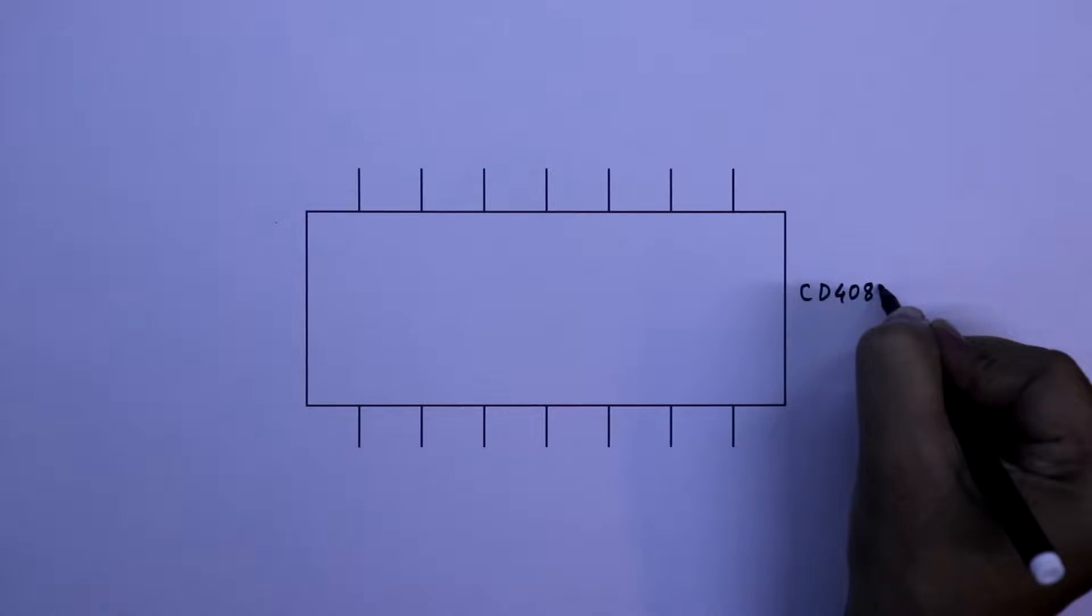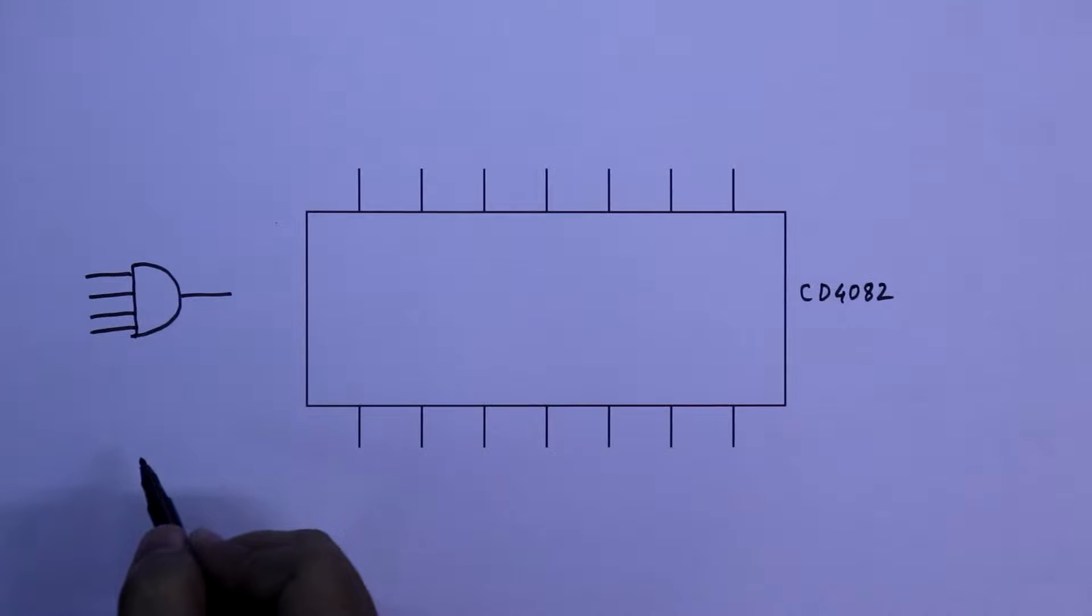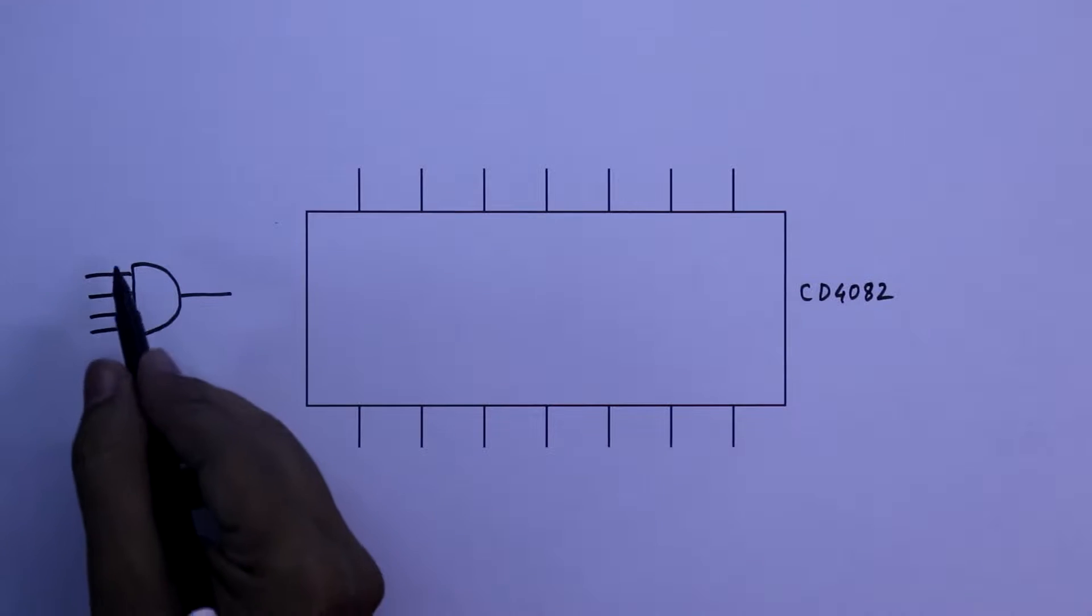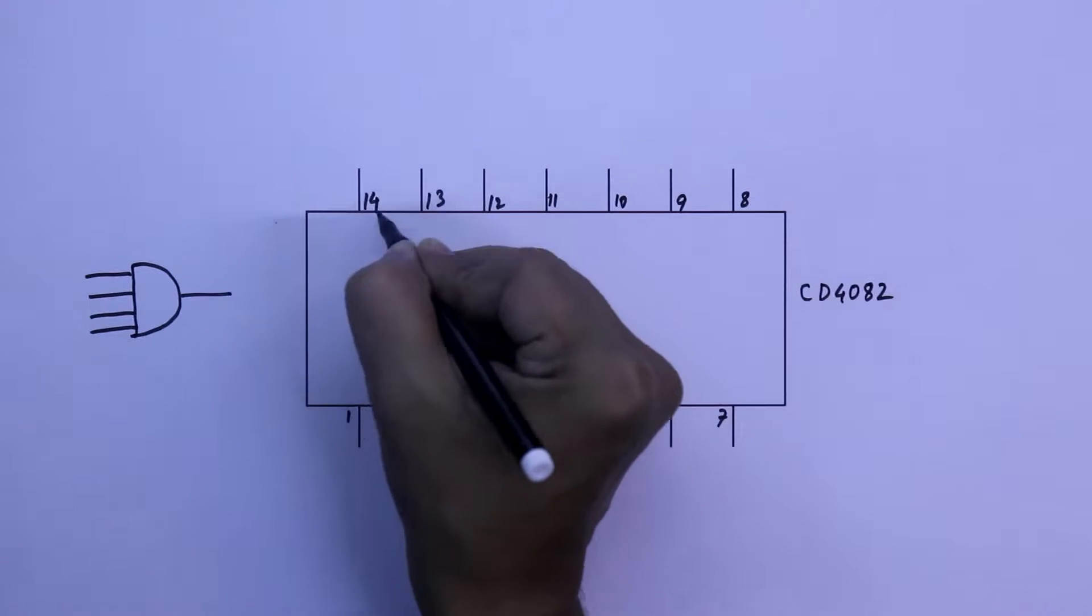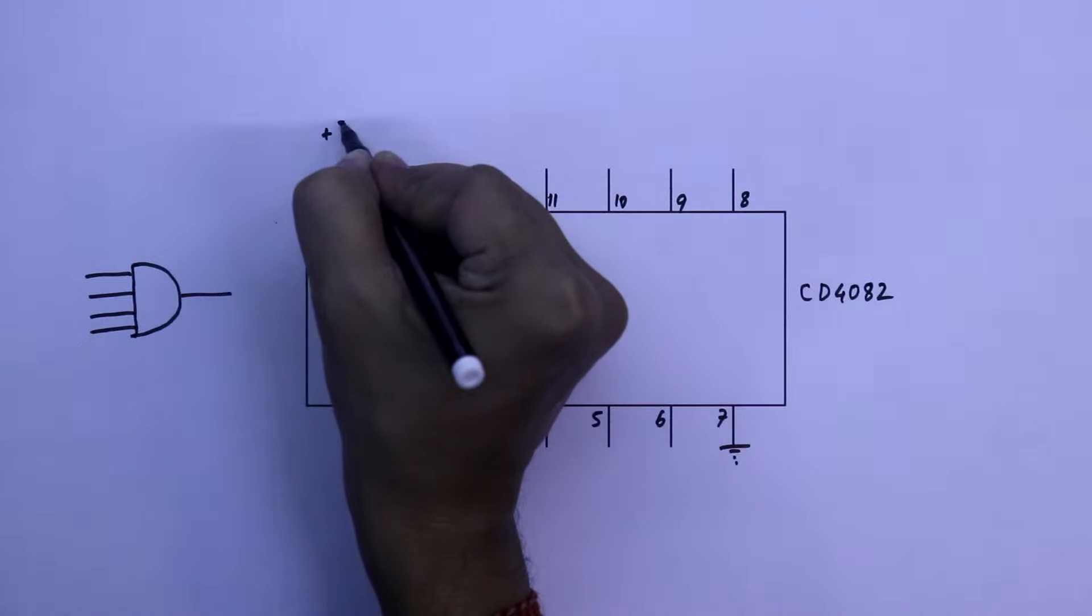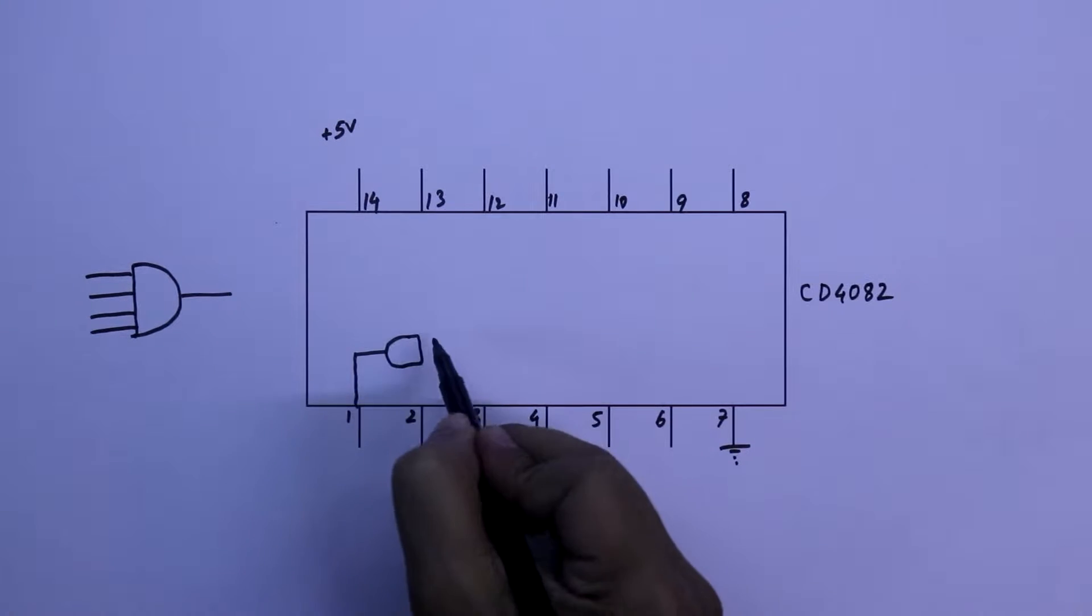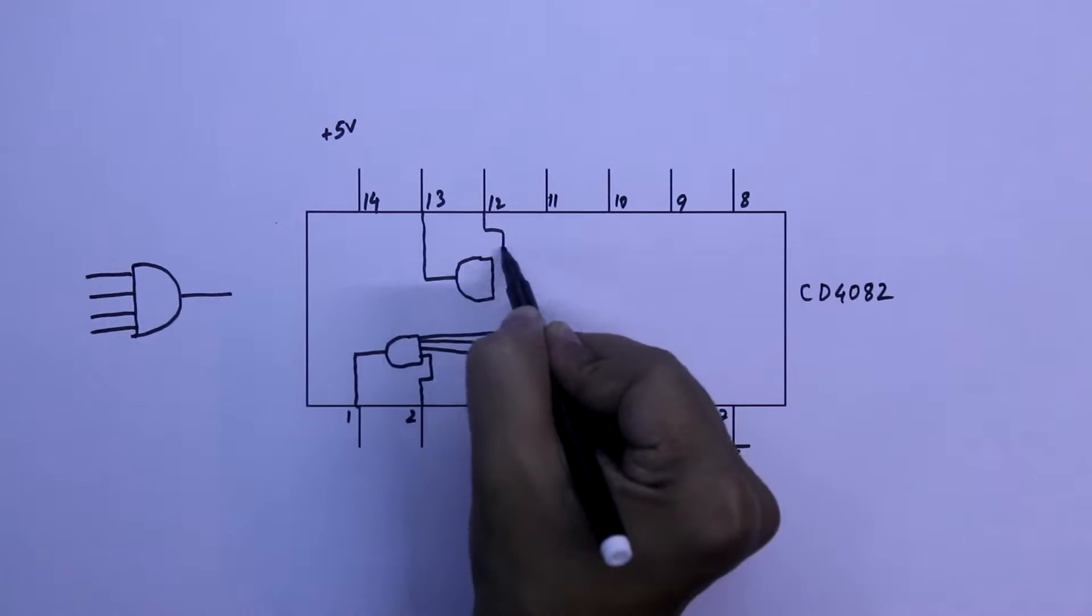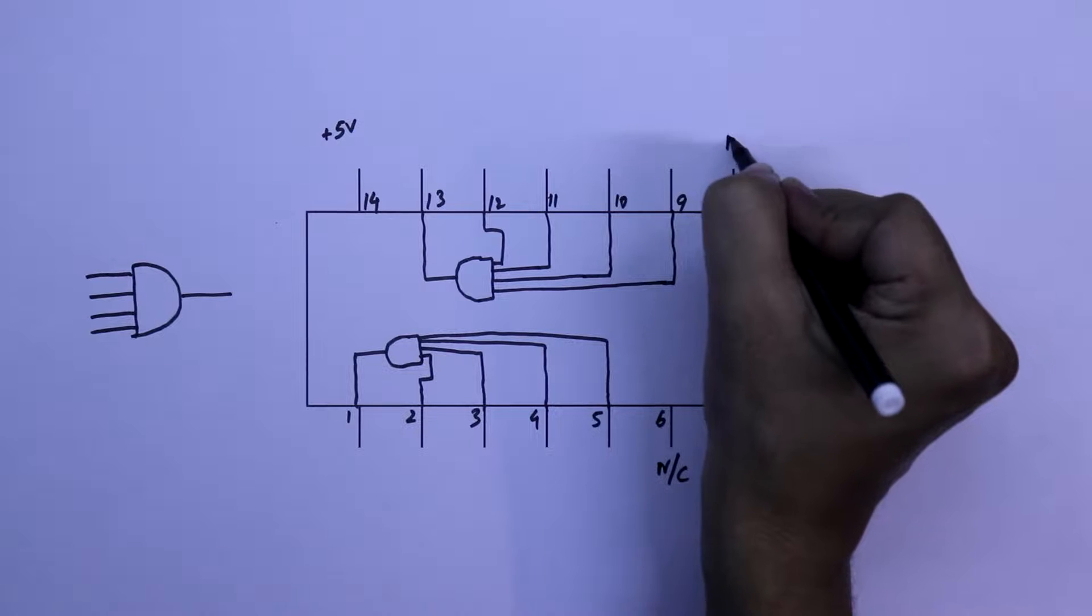CD4082, it is a 4 input AND gate. The 4 inputs will be ABCD and output will be Y. This IC has 14 pins, pin 7 is ground and pin number 14 is plus VCC. I will supply plus 5V. This is gate 1 and gate 2. Pin number 6 and 8 are no connection pins.